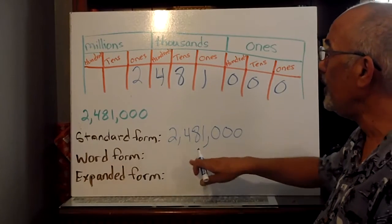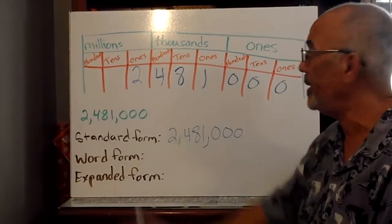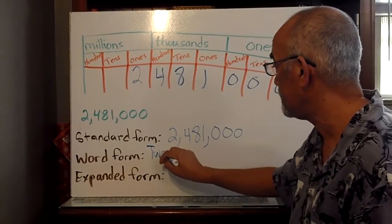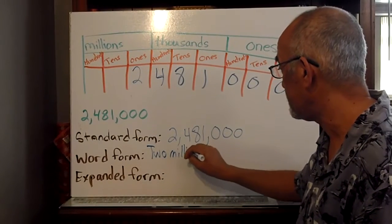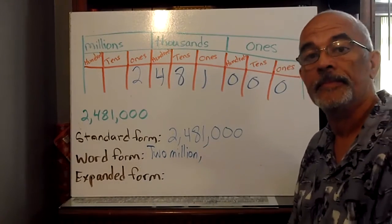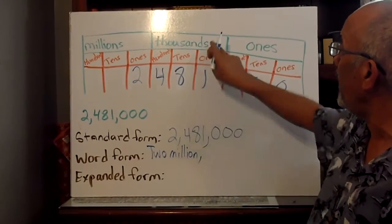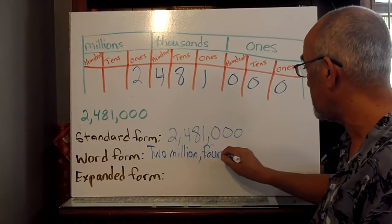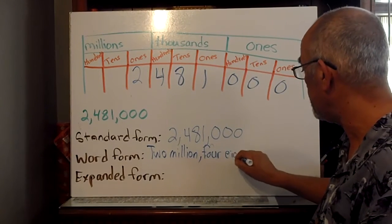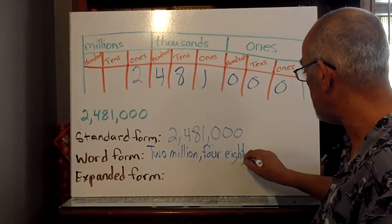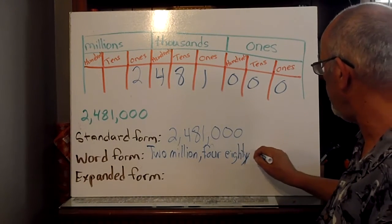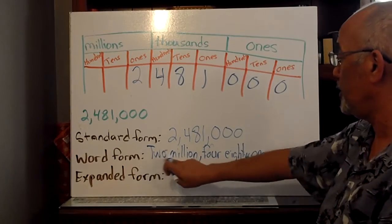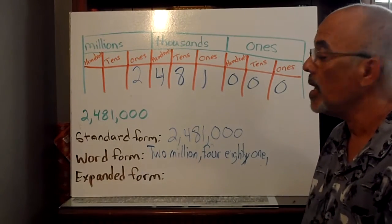Now, in words, we do the same thing. We look between periods. The only thing in the millions period is a two, so it's two million, comma. And we got four hundred and eighty-one in the thousands, so it's four hundred.